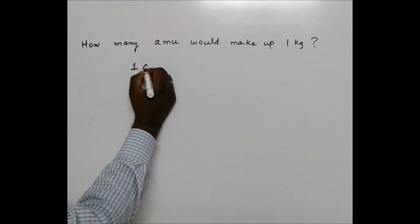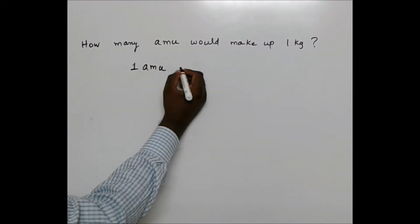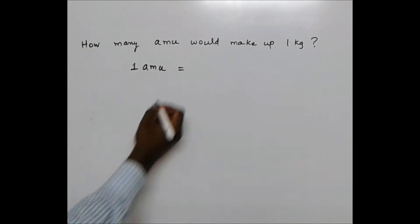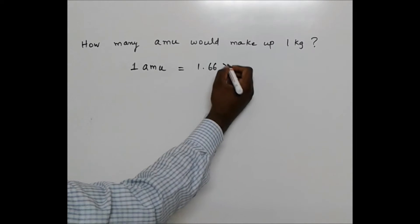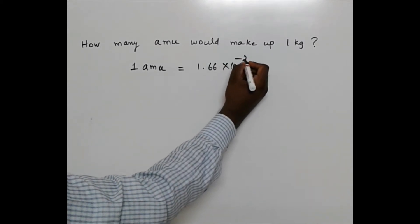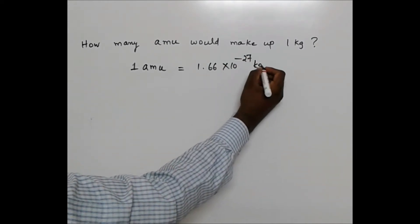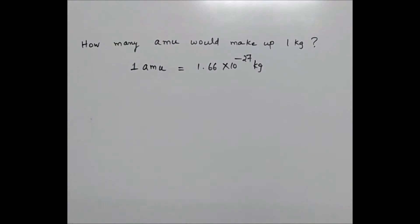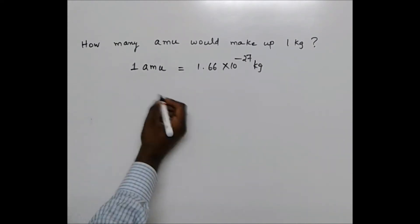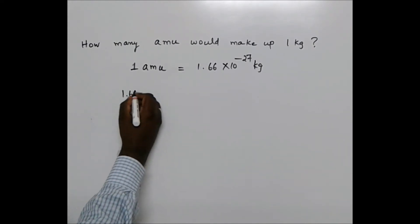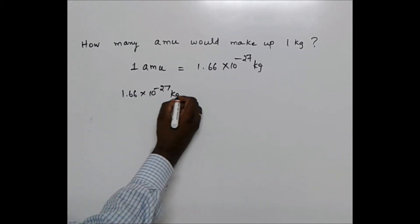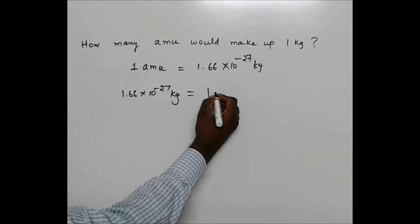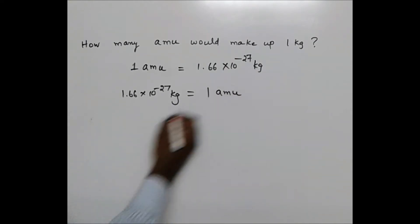Now 1 amu, 1 atomic mass unit, is said to be 1.66 times 10 power minus 27 kilograms. So if I rewrite the equation, 1.66 times 10 power minus 27 kilograms can be written as 1 amu.